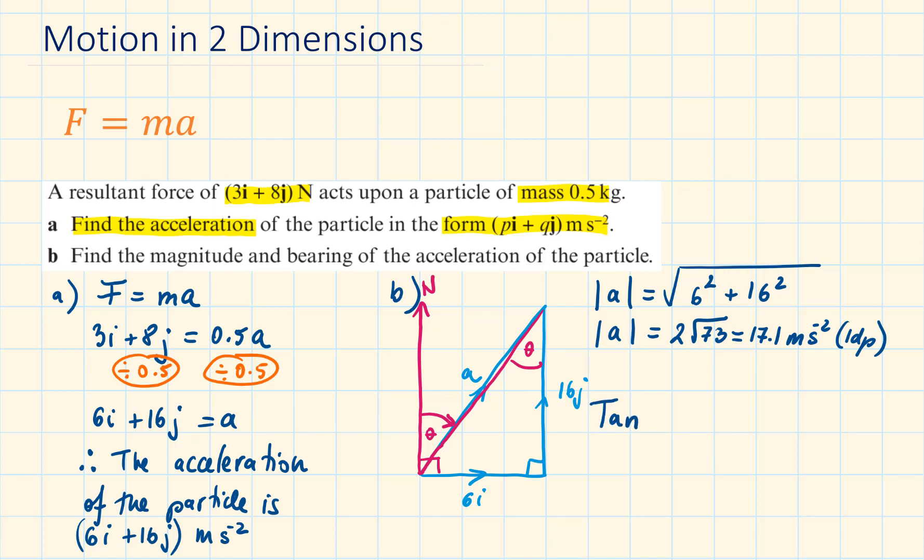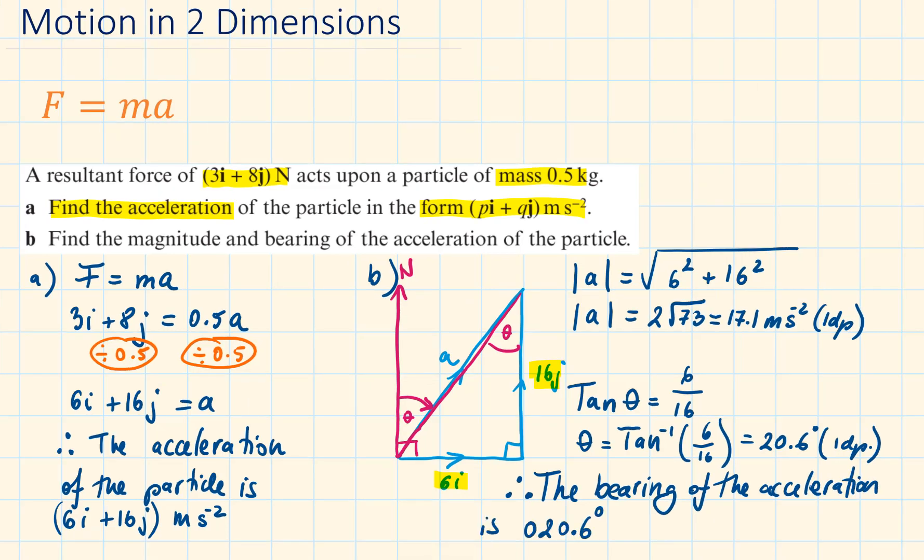we can use tan opposite over adjacent. So we will have tan theta is equal to 6 over 16. Theta is equal to inverse of tan 6 over 16, which is 20.6 degrees to 1 decimal place. Writing out our conclusion, we have to make sure that we are going to use free figure bearing before the decimal point.